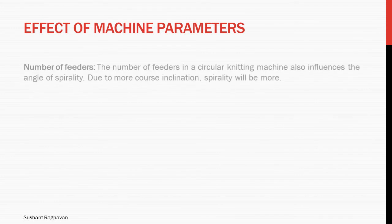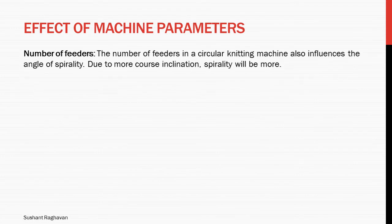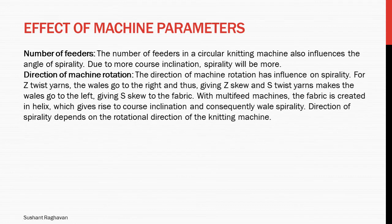The number of feeders in a circular knitting machine influences the angle of spirality; due to more course inclination, spirality will be more. Direction of machine rotation also has influence: for Z twist yarns, the wales go to the right giving Z skew, and S twist yarns make the wales go to the left giving S skew. With multi-feed machines, the fabric is created in a helix which gives rise to course inclination and consequently spirality. Direction of spirality depends on the rotation direction of the knitting machine.